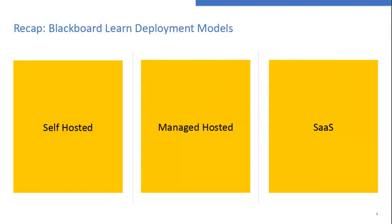Before we go into the exciting part of the roadmap — the features and capabilities — I wanted to start with a quick recap of the deployment models that currently exist for Blackboard Learn. As most of you know, there are currently three deployment models: self-hosted, where you host Learn yourself; managed-hosted, using Blackboard's data centers; and SaaS, where Learn is hosted in the cloud using Amazon Web Services. We are currently on a transition to becoming fully SaaS-based.